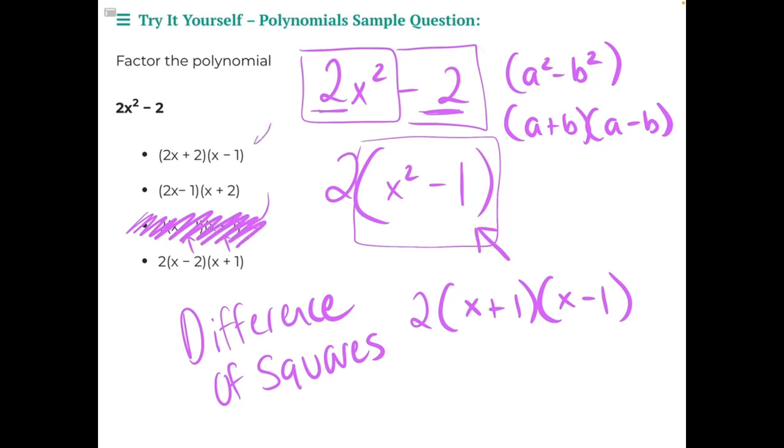If we look at these top two answer choices, we can see that they have distributed the 2 that was once outside the parentheses back into this first set of parentheses. So let's try that and see if we can get a match. 2 times x and 2 times 1 would give us 2x plus 2 times x minus 1, and that will match our first option, making it our correct answer.